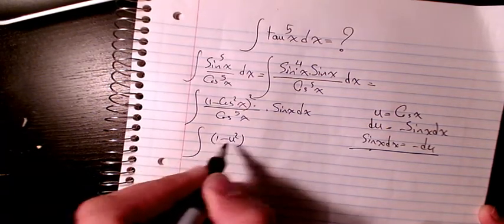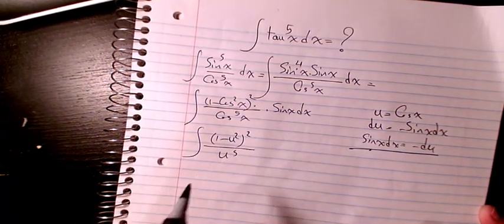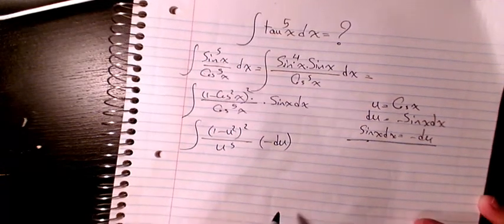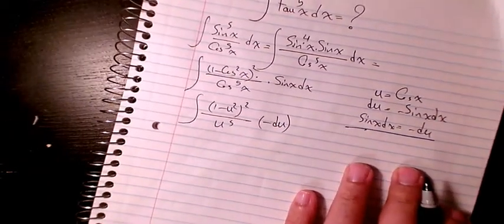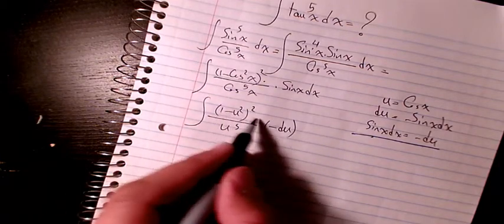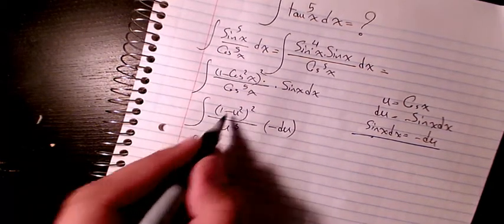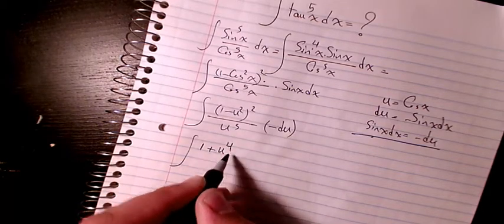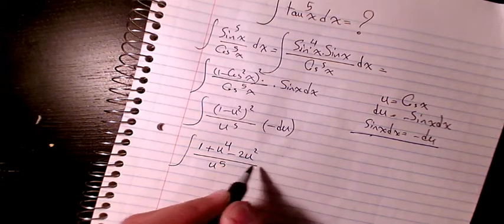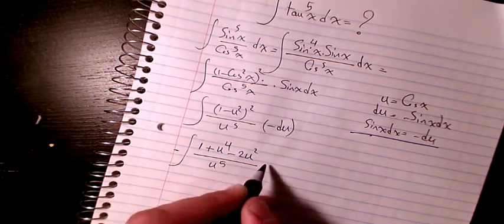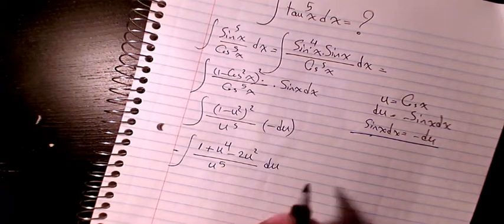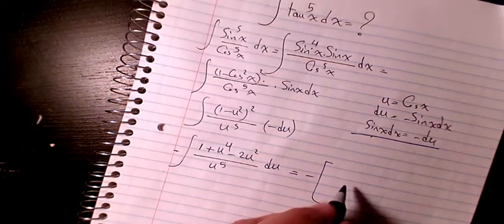So we have negative (1 minus u squared) squared divided by u to the power of 5 du. Expanding (1 minus u squared) squared gives 1 plus u to the power of 4 minus 2u squared, so we have negative times (1 plus u⁴ minus 2u²) divided by u to the power of 5, du.